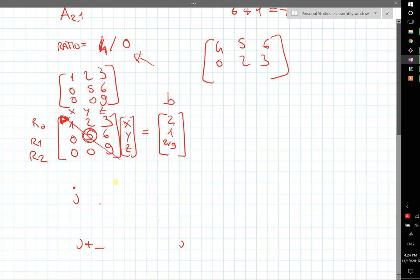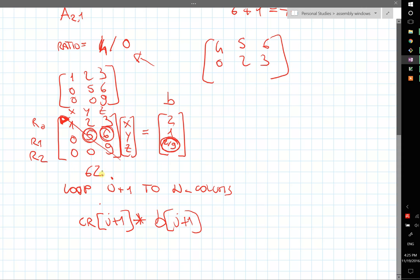So what we're going to do is, we are going to loop from j plus 1 to number of columns. Then what we do, we grab, so let's say the current row, we grab the element j plus 1, which is going to be this one, and we multiply it by b j plus 1, which is going to be this one, right? Because that's the value of z. And as we said before, 6z is the value, so we want to plug the value of z.